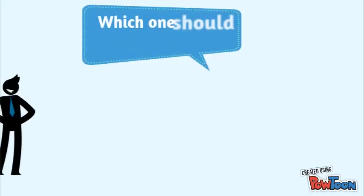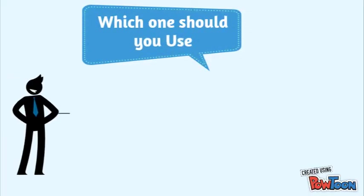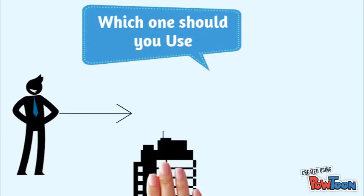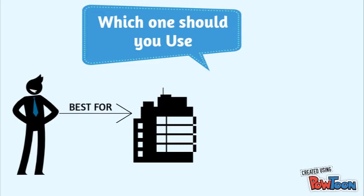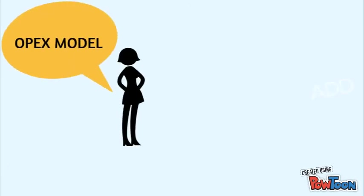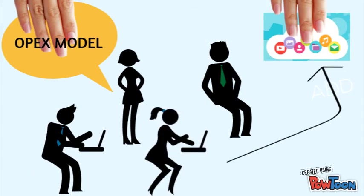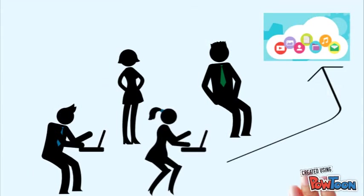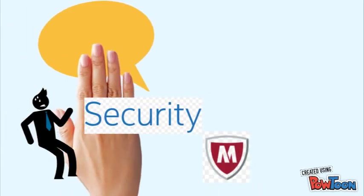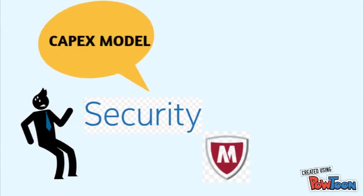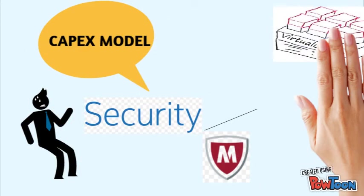Which one should you use? What's going to be best for your organization? Generally speaking, businesses that work more on the OPEX model, have less IT staff, and fewer security concerns are more cloud-oriented. Businesses that need greater control of integration and security would lean towards virtualization.